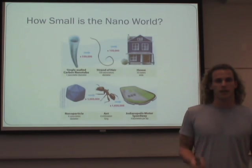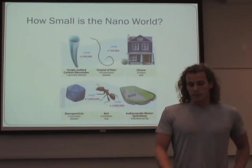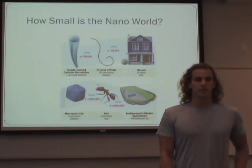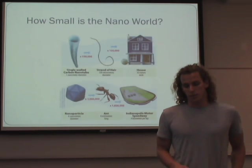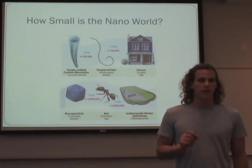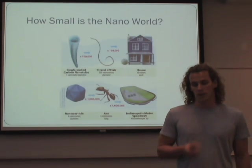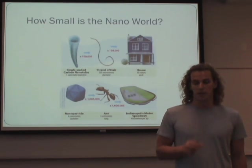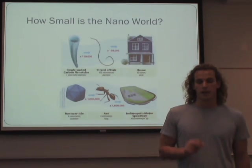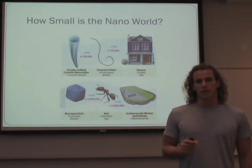So how small is the nanoworld? If you look at something like a single-walled carbon nanotube, which is one nanometer in diameter, if you were to multiply that by 100,000, you would get the diameter of a strand of hair. If you were to multiply that by another 100,000, you would get the width of a house.